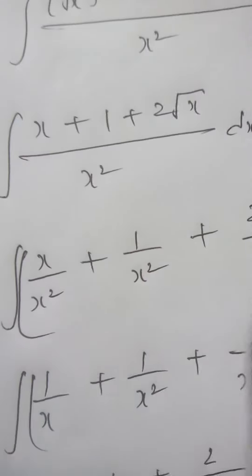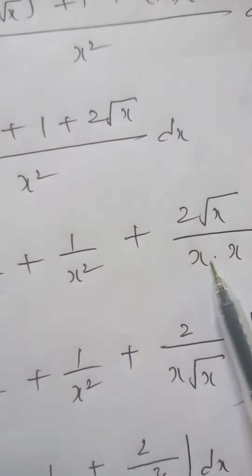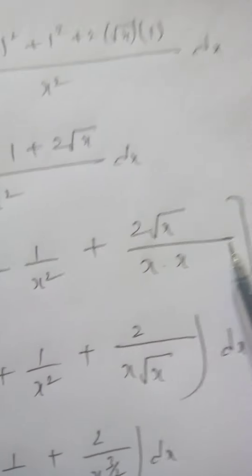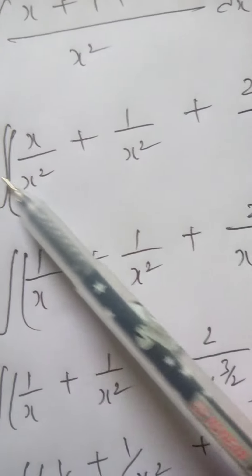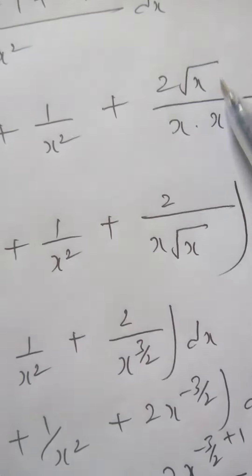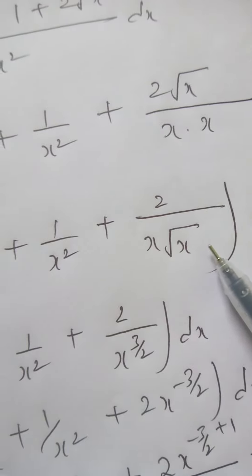1 plus 2 root x by x square. Now I will separate it. x by x square plus 1 by x square plus 2 root x by x square. I can write as x into x dx. So again, it will become 1 by x. It will become 1 by x square. This will become root x into root x, so it is 2 by x root x it will become.